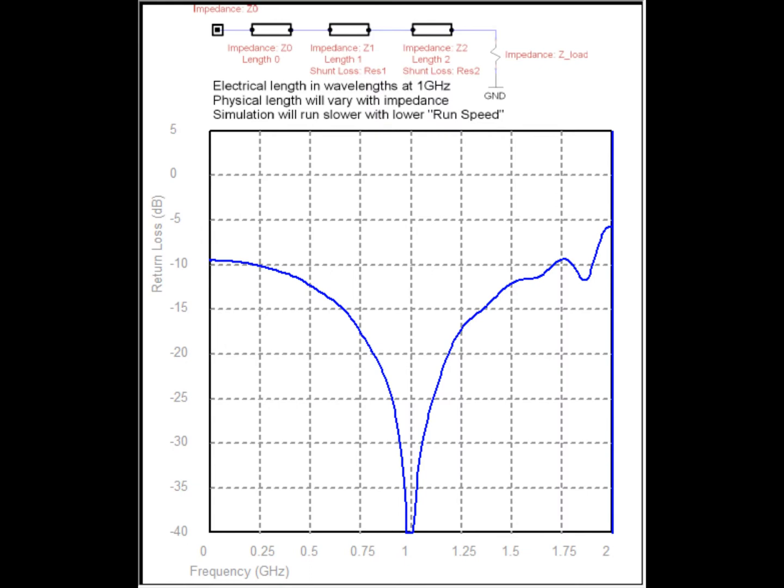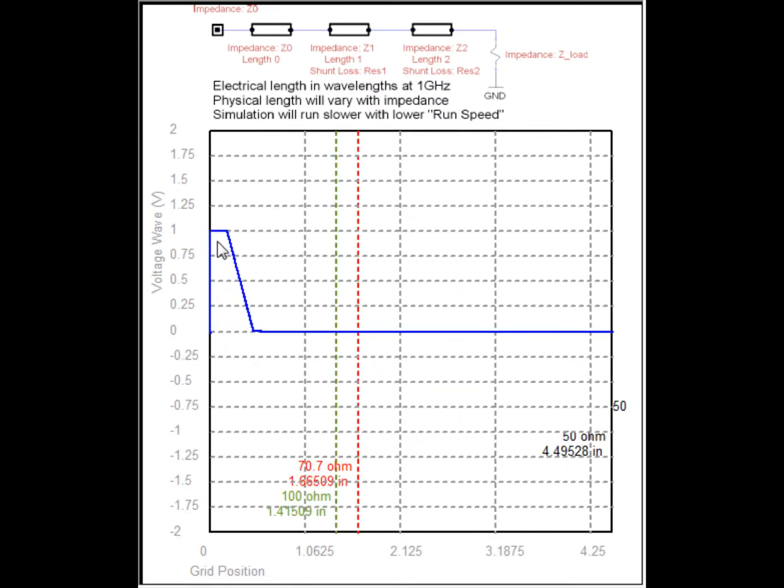Now, again, I'm going to inject my DC signal into here. And again, we're going to see the ripple that you get off of the line when you have mismatch.